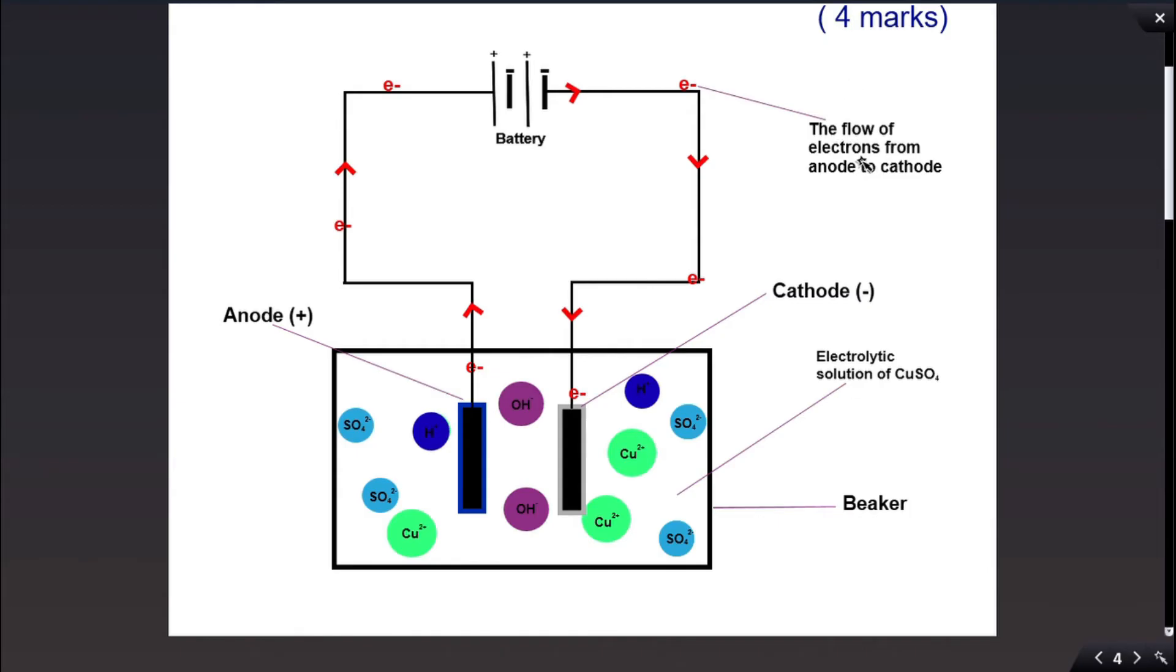The flow of electrons from anode to the cathode, the battery that kickstarts the chemical process. Now inside the beaker, the ions are the sulfate ions, the copper ions, the hydroxonium ions also known as H+, and the hydroxide ions. At the anode we know that oxidation takes place, and reduction takes place at the cathode.